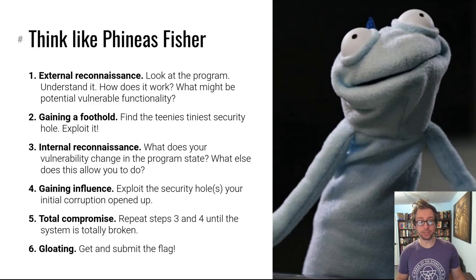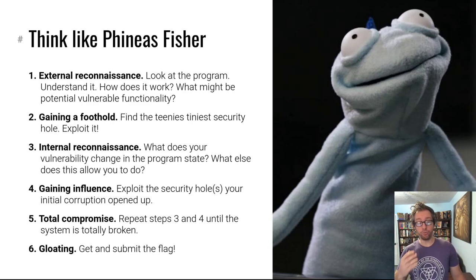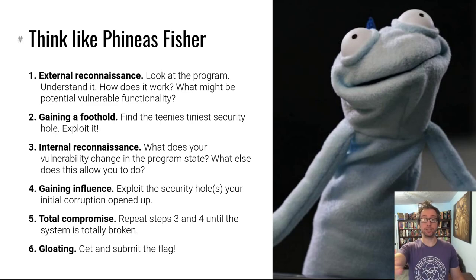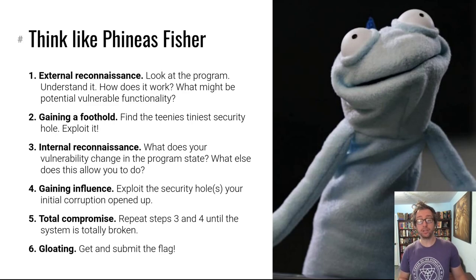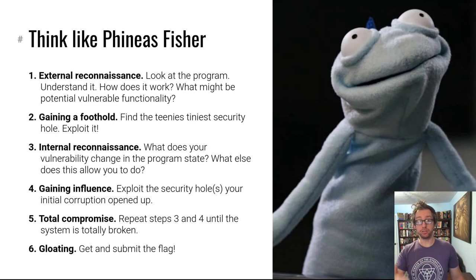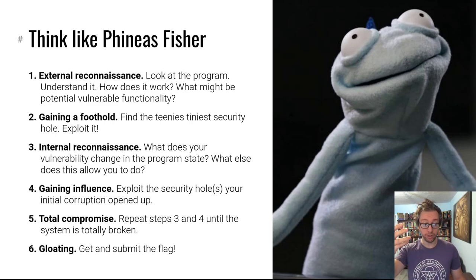Overflow the buffer, for example. Then do the internal reconnaissance: stop and look at what your single step achieved. You overflowed the buffer — what have you achieved additional control over? What else can you do as a next step? What other vulnerabilities have you now introduced into the program that might allow you to continue gaining additional influence over the program state?